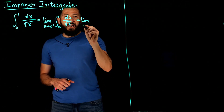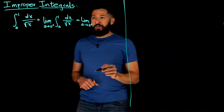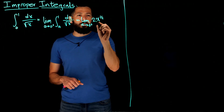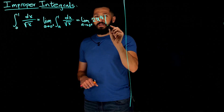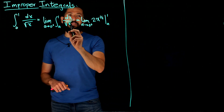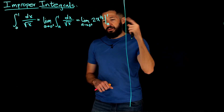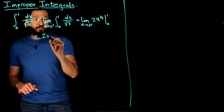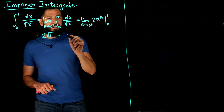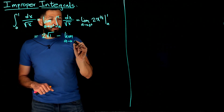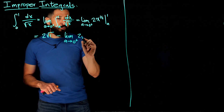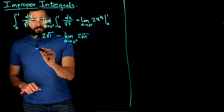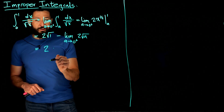We evaluate the integral. Writing 1 over square root of x as x to the negative one-half, we add one to the exponent and divide: the antiderivative is x to the one-half over one-half, which is 2 times the square root of x. We evaluate from A to one. At one, we get 2 times the square root of one, which is 2. Then we subtract the limit as A goes to zero from the right of 2 times the square root of A. That limit is zero. So we get 2 minus 0, which equals 2, and the integral converges to 2.